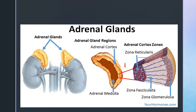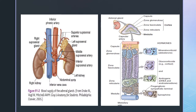The adrenal cortex in adults consists of three distinctive zones. The outermost zone, just below the capsule, is the zona glomerulosa, then zona fasciculata and zona reticularis. Zona glomerulosa is a thin layer of cells that lies just underneath the capsule and constitutes about 15% of the adrenal cortex.